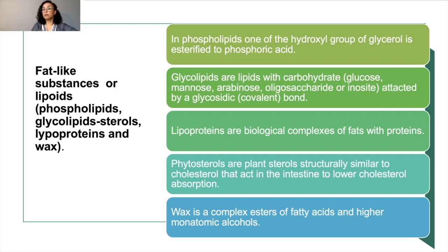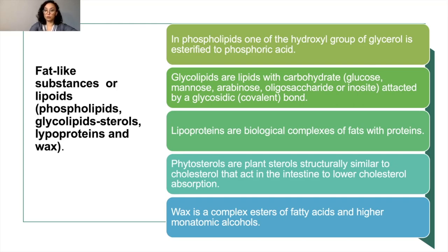In phospholipids, one of the hydroxyl groups of glycerol is esterified to phosphate. Glycolipids are lipids with carbohydrates such as glucose, monose, arabinose, oligosaccharide, or inositol, which are attached by a glycosidic covalent bond. Lipoproteins are biological complexes of fats with proteins. Phytosterols are plant sterols structurally similar to cholesterol that act in the intestine to lower cholesterol absorption. Wax is the complex esters of fatty acids and higher monoatomic alcohols.